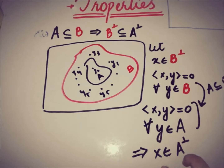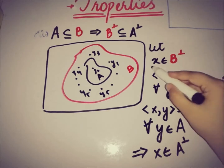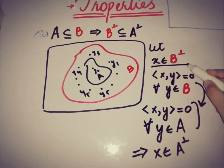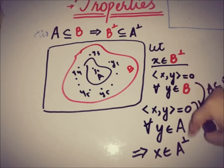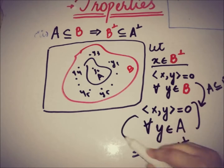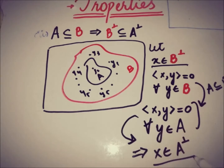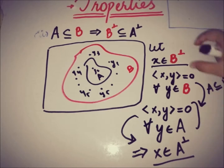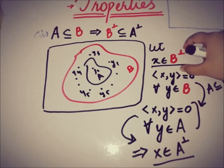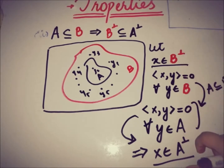Initially X was taken from B annihilator. By applying the definition and using the subset relation between A and B, and then applying the definition again, we get that X belongs to A annihilator. So this implies that A annihilator is a superset of B annihilator, i.e., B annihilator is a subset of A annihilator.